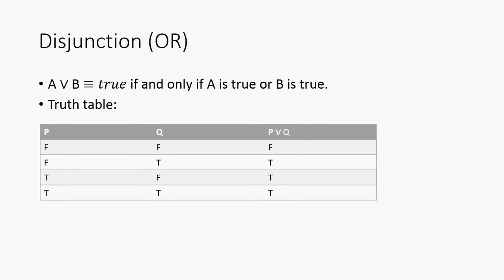Next, we have our disjunction, or OR. So, A or B is equivalent to true if and only if A is true or B is true. So, note that when both P and Q are false,